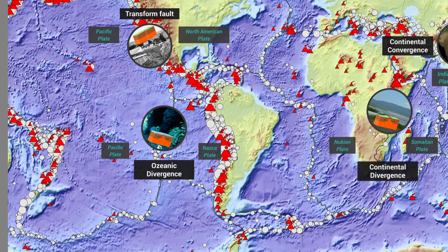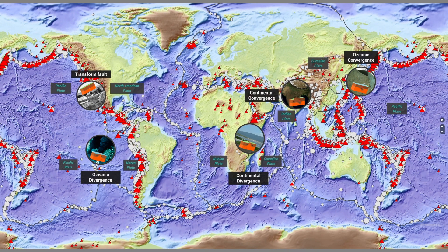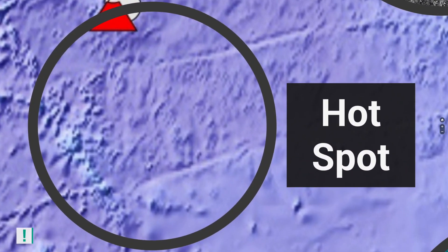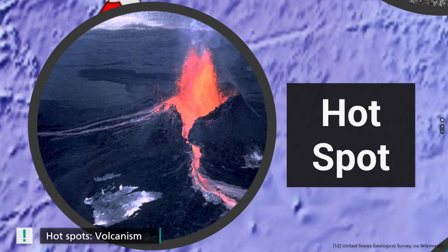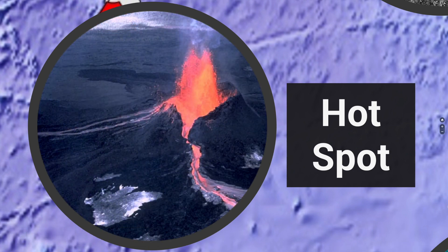Up to this point, we have spoken about seismicity and volcanism at plate boundaries. However, earthquakes and volcanism can also occur within lithospheric plates. The volcanic islands of Hawaii, for example, are fed by such a hotspot, which more or less burns a hole in the overlying plate.